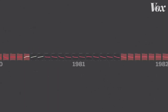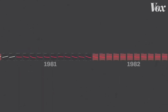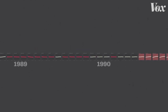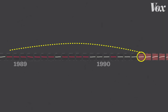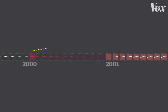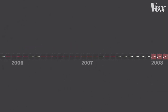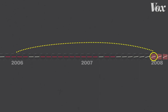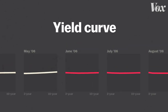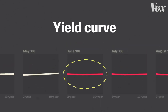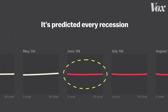It happened again a few months later — the line curved downward, then boom, another recession. It happened again in 1988, again in 2000, and again in the mid-2000s. This line is called the yield curve, and it's predicted every recession in the past half century.